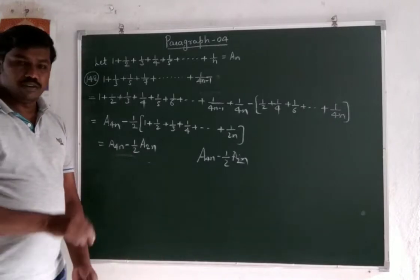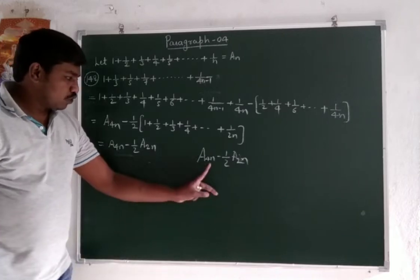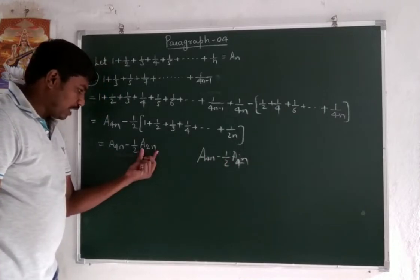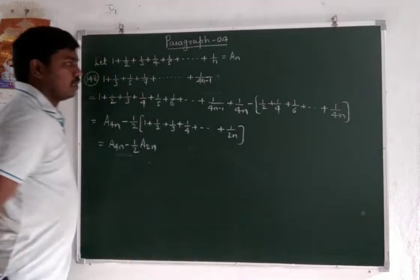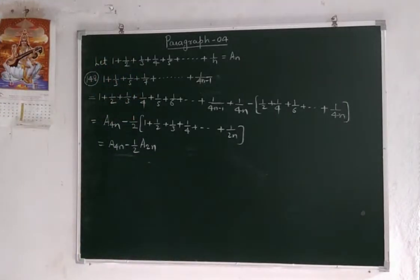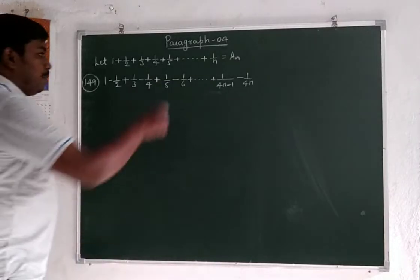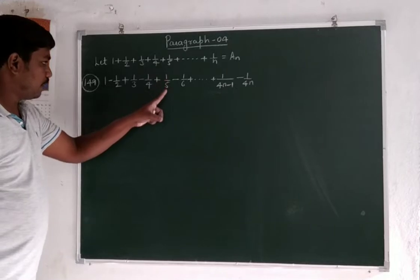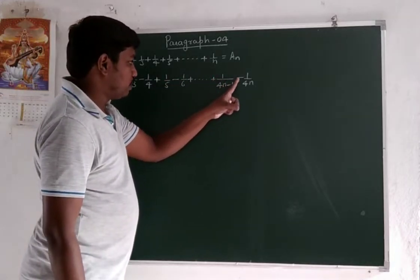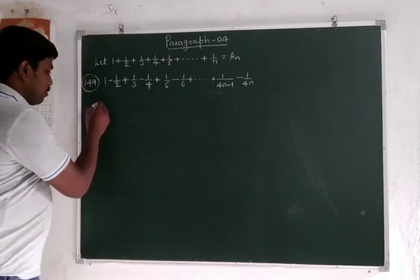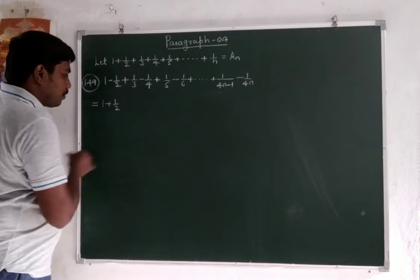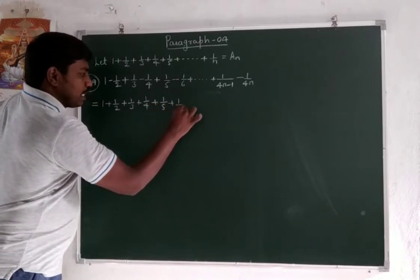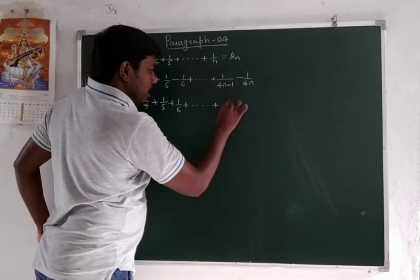Correction: a₂ₙ, so a₄ₙ. So a₄ₙ. And then: a₄ₙ minus 1 by 4, plus 1 by 5, minus 1 by 6, plus 1 by 4n minus 1, minus 1 by 4n. This is the simplification of 1 by 2 plus 1 by 3 plus 1 by 4 plus 1 by 5 plus 1 by 6, last term is 1 by 4n.